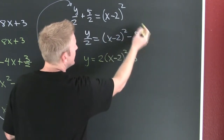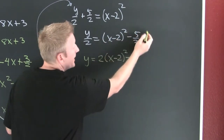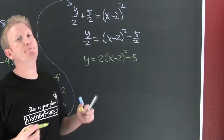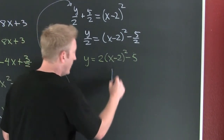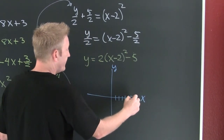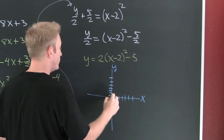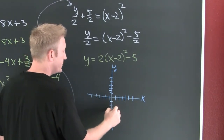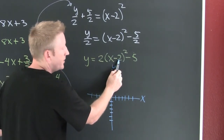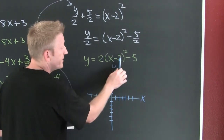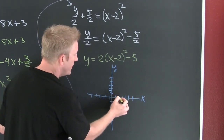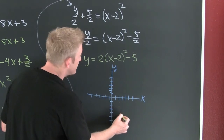Now I have it in preferred form, so I can easily graph this thing. Setting up x and y axes — this says it's going to open up, shift right 2 (opposite the way you think), and shift down 5. So from the vertex we go right 1, 2 and down 1, 2, 3, 4, 5 and put a dot there.